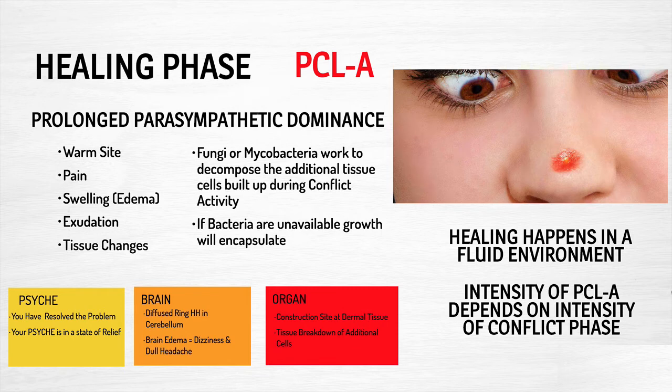Once we resolve a conflict and no longer feel attacked, we go into Phase A of healing, moving into parasympathetic dominance. The area is going to be warm. There's pain because there's swelling — all healing happens in a fluid environment with tissue changes, exudate, discharge, and pus. What's happening is fungi and mycobacteria are at work, and their job is to decompose the additional proliferation of dermal cells. They break down the cells that were built up during conflict activity because they are no longer necessary.